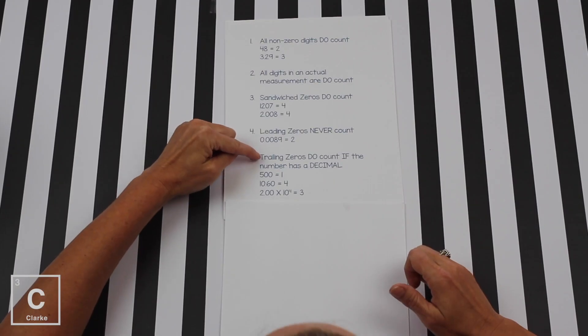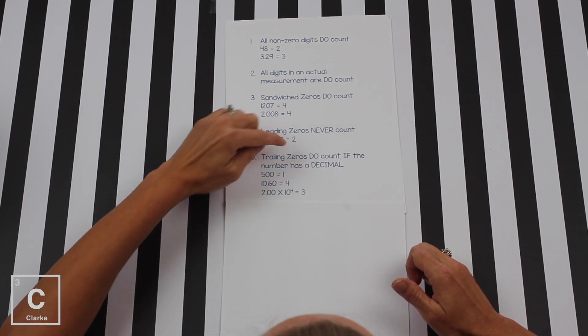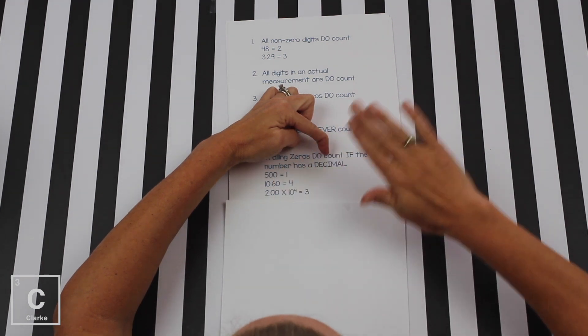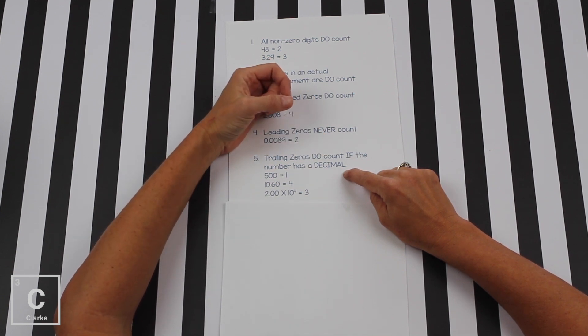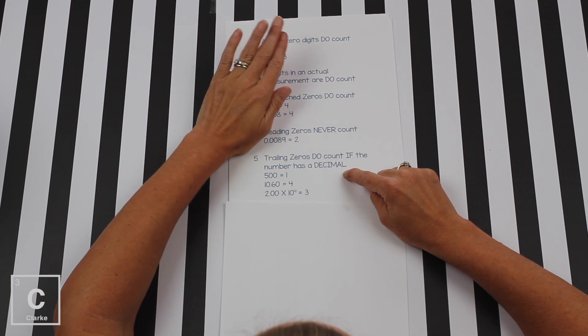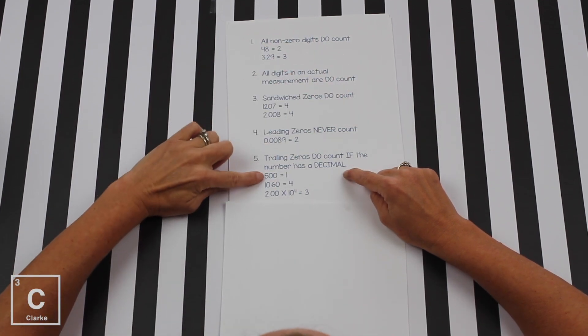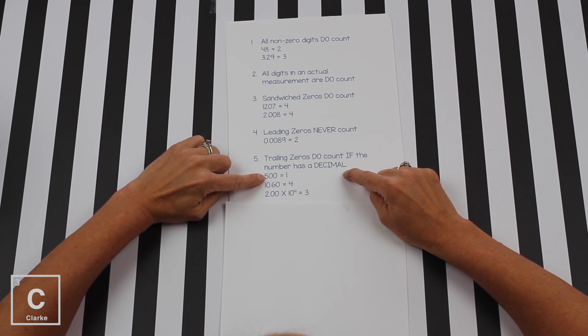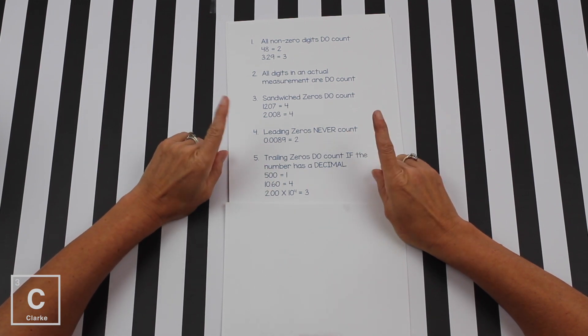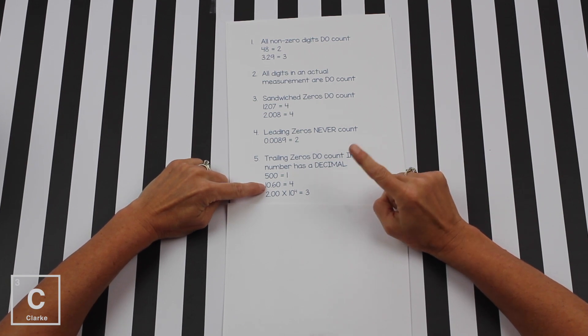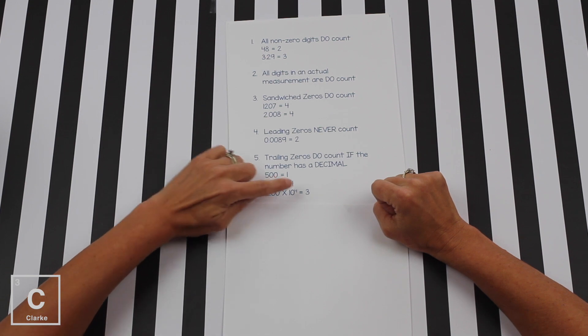Now this last rule, if you were to say one rule is the most important, this is it. This is the rule that gets most people confused. So let's really focus. Trailing zeros. Trailing means zeros that are at the end of a number. Trailing zeros do count only if the number has a decimal. If the number doesn't have a decimal, they don't count. I normally like to say no decimal, no count. Decimal, count. 500, no decimal. Trailing zeros don't count. 500, one SIGFIG because the trailing zeros do not count. 10.60, there is a decimal. So trailing zeros count. So that is one, two, three, four, four SIGFIGS.